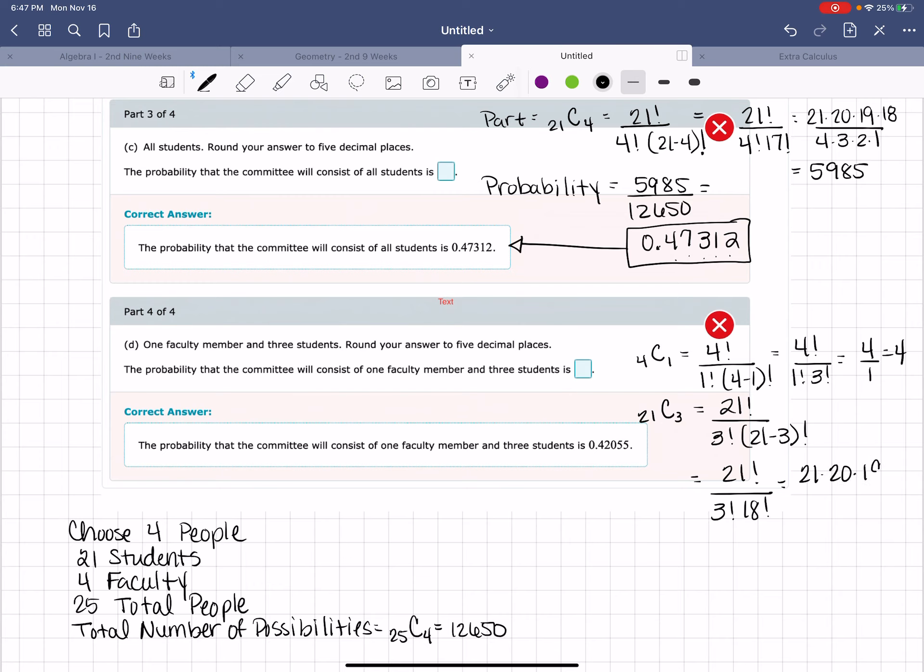That's going to give me 21 factorial over 3 factorial times 18 factorial. That will leave me with 21 times 20 times 19, all over 3 times 2 times 1, which is going to give me 21 times 20 times 19.